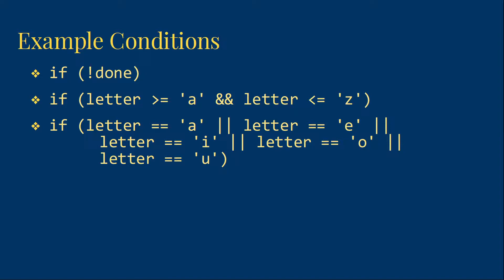So OR has the lowest precedence of these three, AND is next, and then NOT has the highest precedence. So we will always do the NOT first, and then the ANDs, and then the ORs.